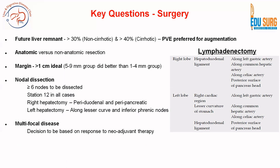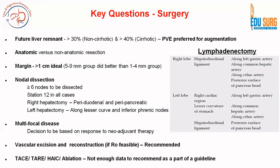Multifocal disease goes for neoadjuvant therapy based on the high-risk criteria, and after that, the decision is taken based on response to neoadjuvant therapy. Vascular excision and vascular reconstruction, if R0 resection is feasible, is recommended. Regarding TACE, hepatic artery chemotherapy, and ablation, there is not enough data so far in intrahepatic cholangiocarcinoma to recommend these as part of guidelines.